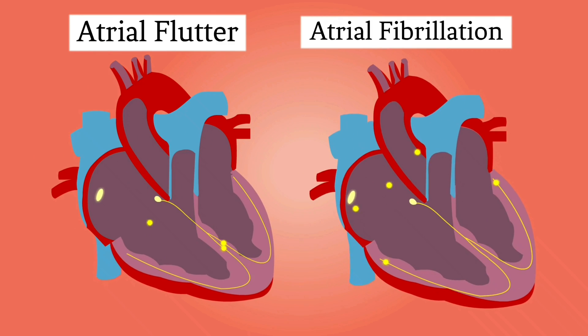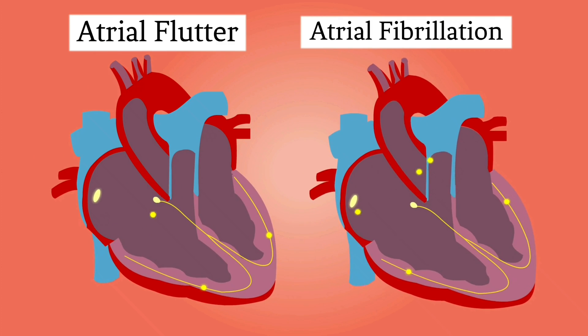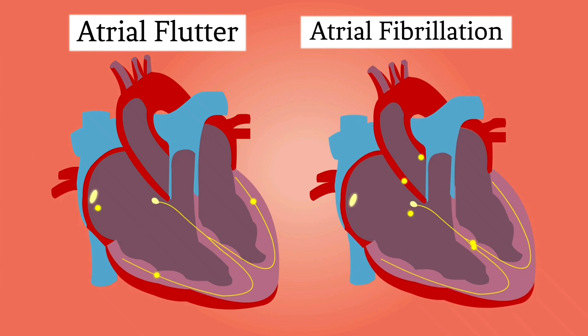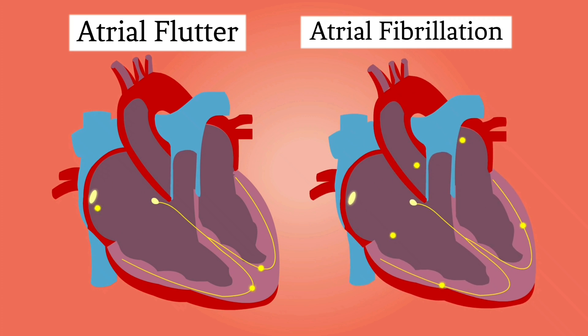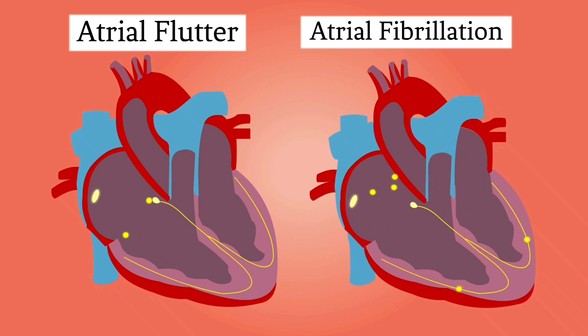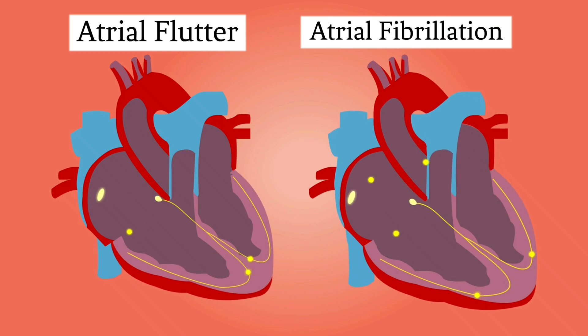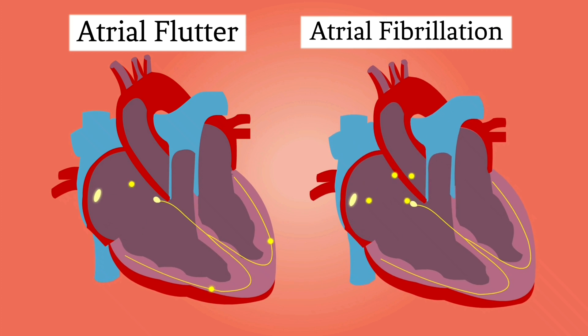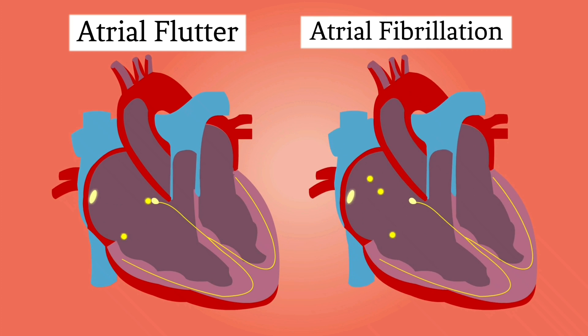In atrial fibrillation, the atria beat irregularly. In atrial flutter, the atria beat regularly but faster than usual and more often than the ventricles, so you may have four atrial beats to every one ventricular beat.